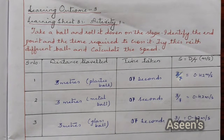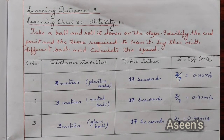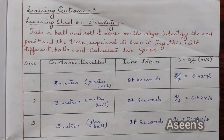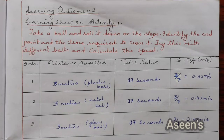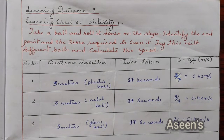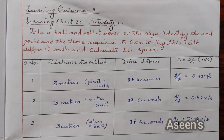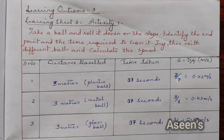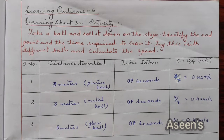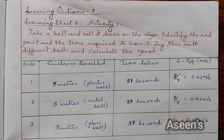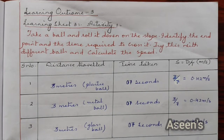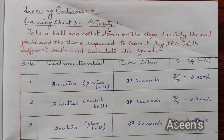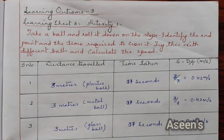As you can see in the tabular column, we have got serial number, distance travelled, time taken, and finally the speed that is distance upon time. In my experiment I have selected a distance of 3 meters, and I have tried with 3 balls: plastic ball, metal ball, and glass ball.